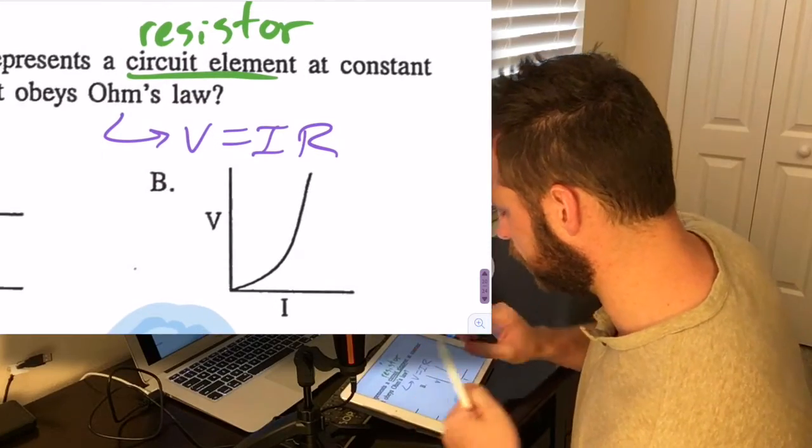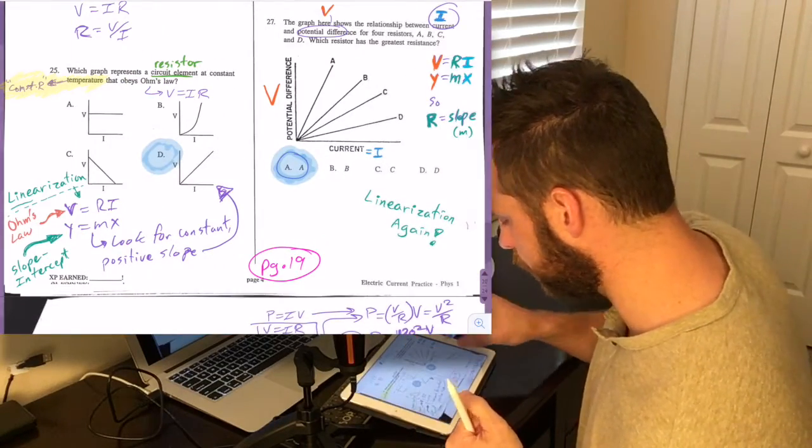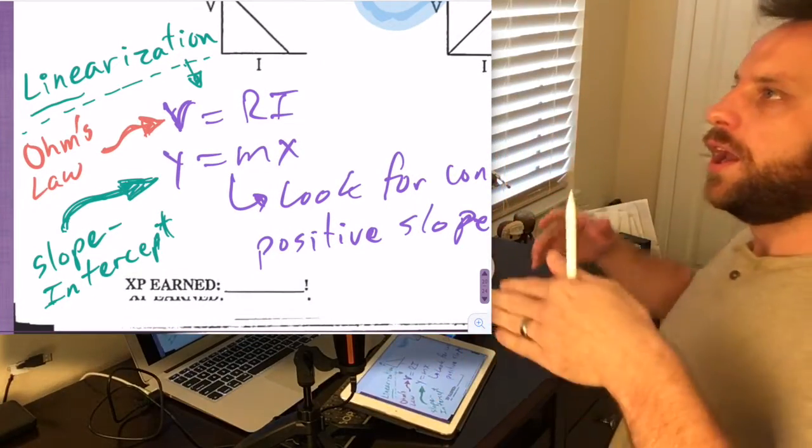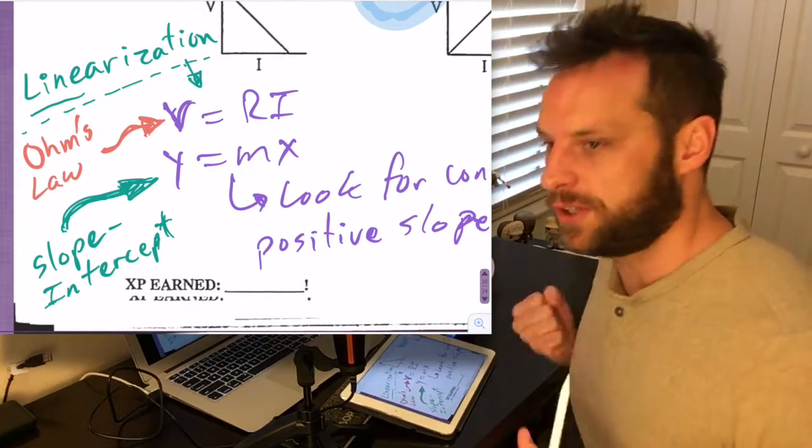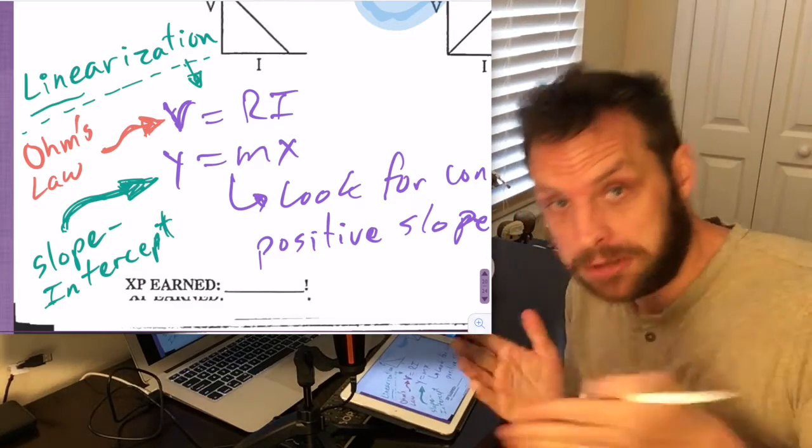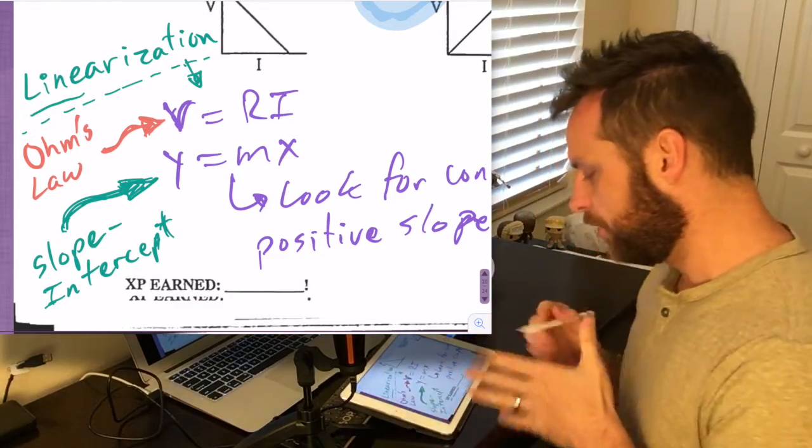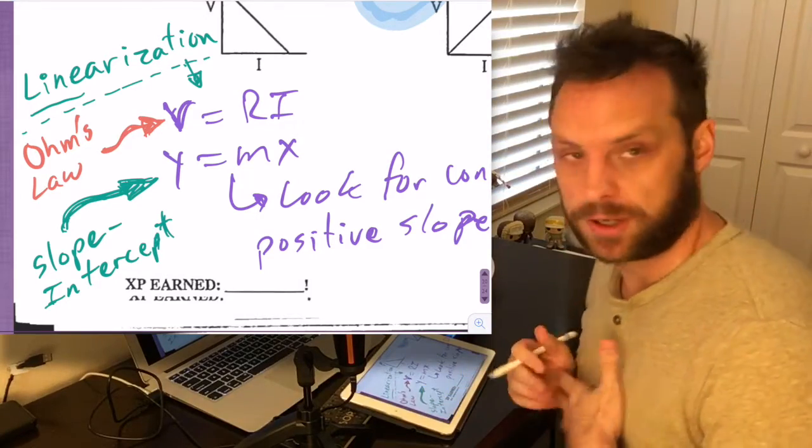And Ohm's law, when they say Ohm's law, it's V equals I times R. So we're going to linearize Ohm's law. Now V equals I times R could also be written as V equals R times I. I times R is the same thing as R times I. And so I'm going to rewrite it V equals R times I here.